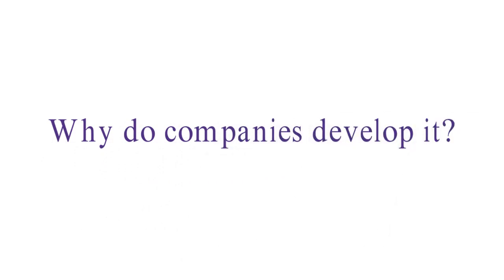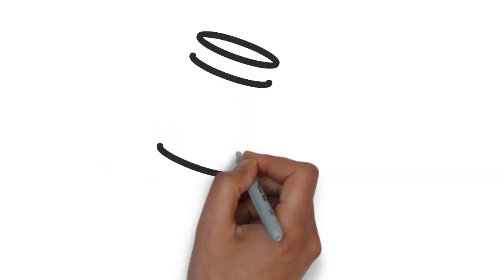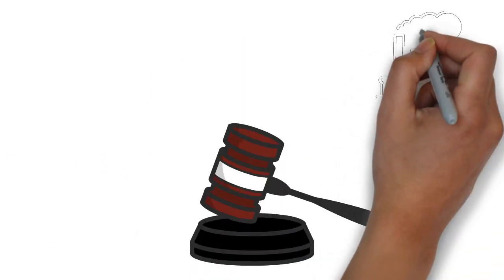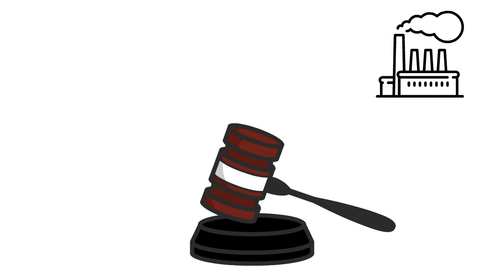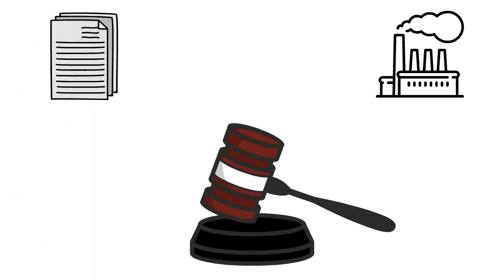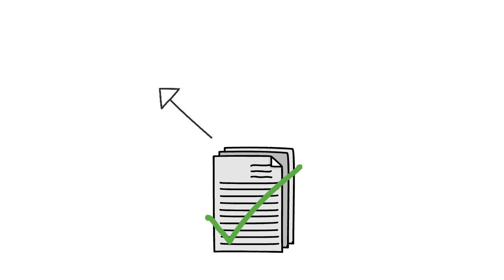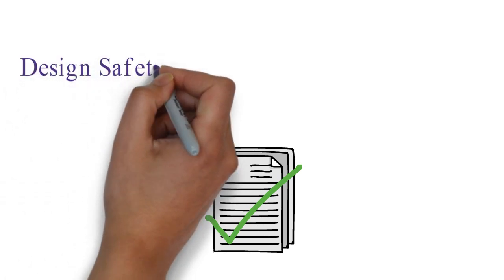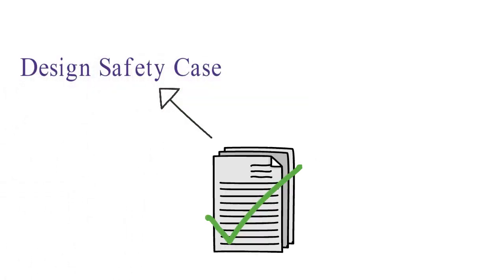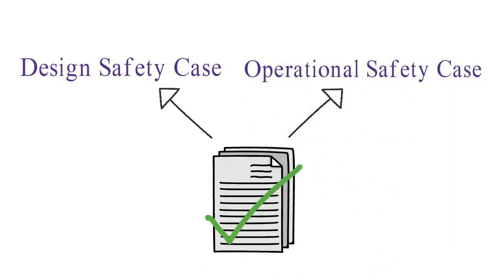Why do companies develop it? Some countries enforce companies in the chemical and process industry to develop a safety case. So to get approval for your project, you will first have to submit a design safety case, and to get a license to operate your facility later, you will have to submit an operational safety case, which shall be updated regularly or in case of major changes in your installation to keep your license valid.